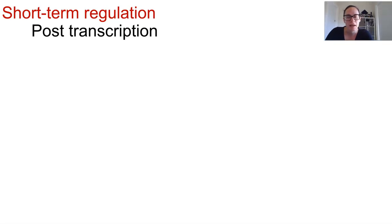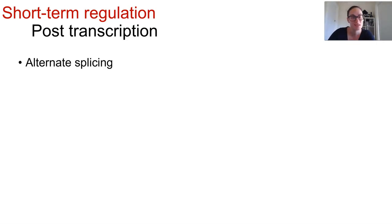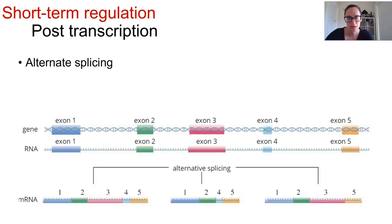Recall that an mRNA strand is created during transcription. It'll undergo modifications before it's then translated — this is known as splicing. So that pre-mRNA will have introns spliced out of it that are not coding for any amino acids in the polypeptide string being created.